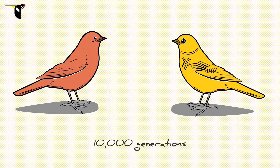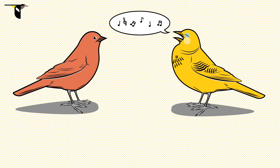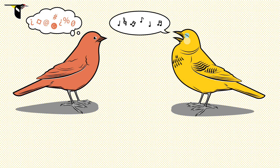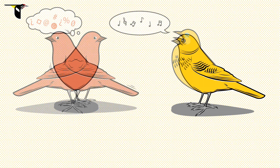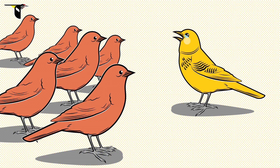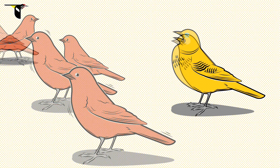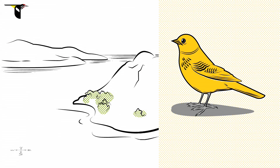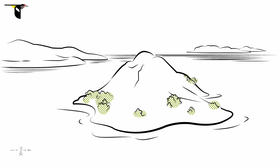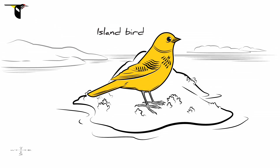What if we fast forward again to 10,000 generations of isolation? This time, the female doesn't even recognize the male's song and is completely uninterested. If this female's mating preferences are widespread in the population, we now have two bonafide species: mainland and island.